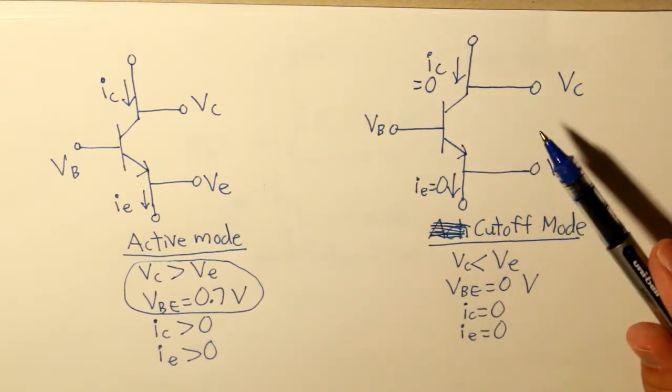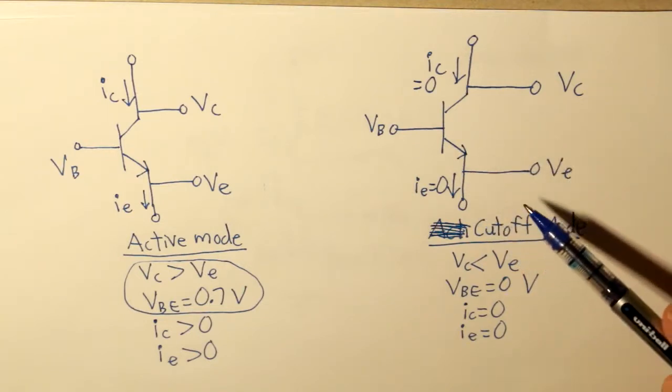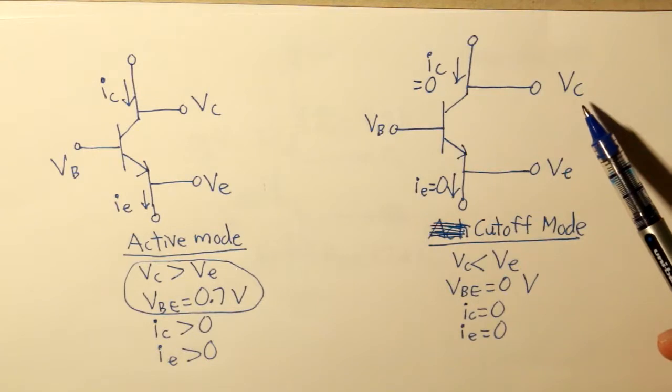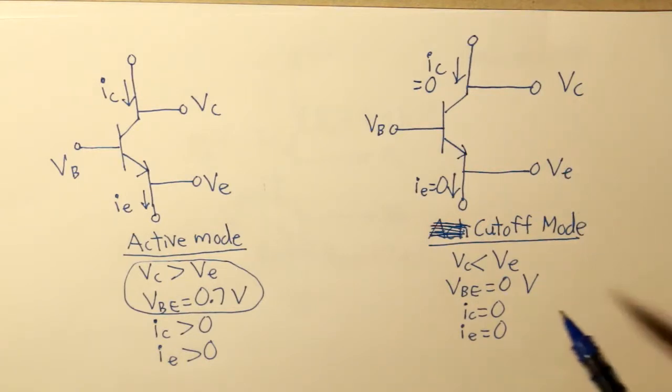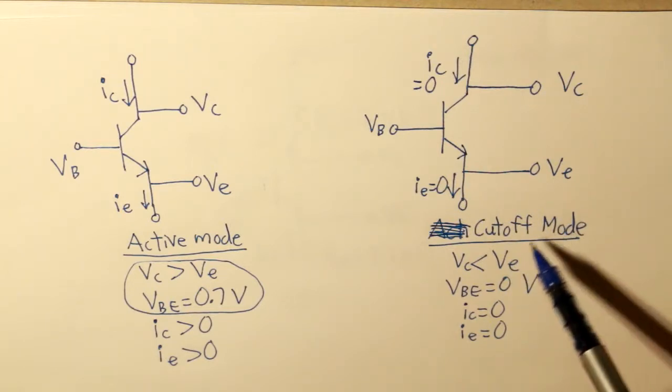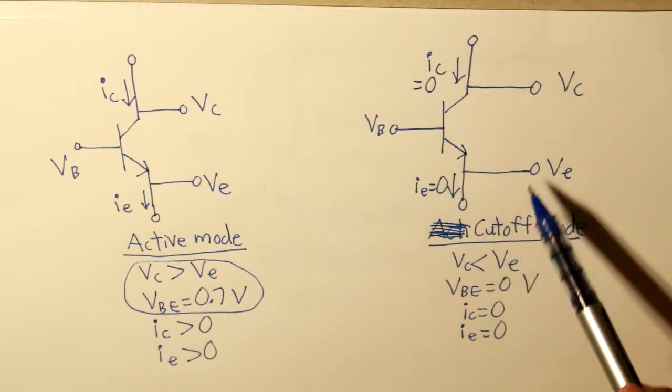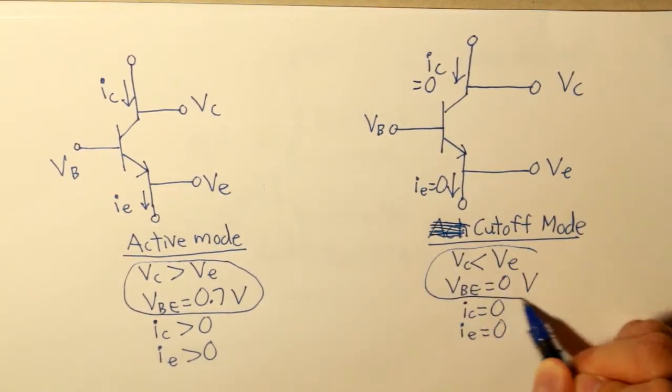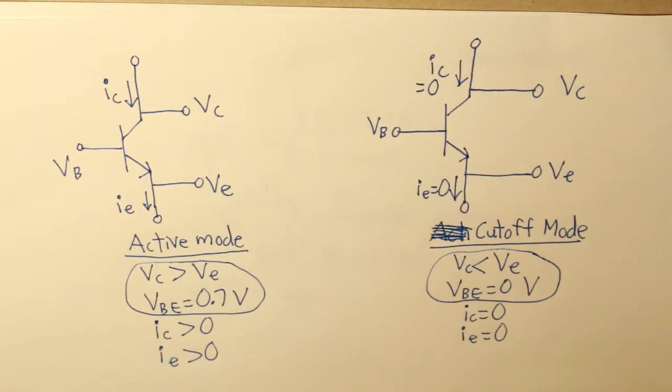In cutoff mode, the BJT is open meaning no current is passing through it. When the collector voltage is less than the emitter voltage, or if the potential barrier VBE is zero, then the switch is open and no current will pass through. Now that we've understood the basic concepts, let's move on to our two examples.